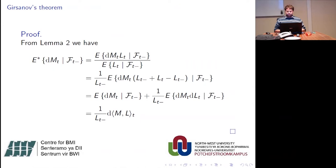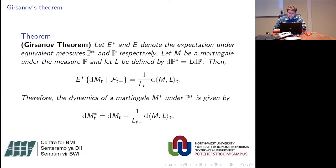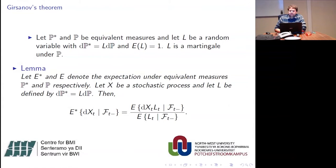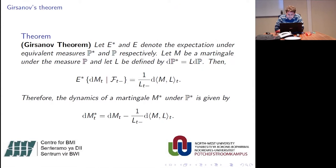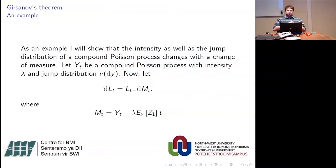This theorem gives a method to apply a change of measure. The first step is to define the Radon-Nikodym derivative L such that the expected value equals 1 and L is a martingale — that's the first step. The second step is to apply the formula, requiring knowledge of the conditional quadratic covariation of the relevant processes. As an example, I apply Girsanov's theorem to a compound Poisson process.